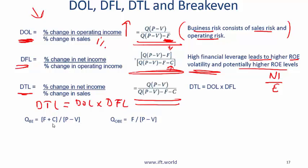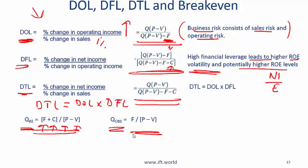The next point has to do with breakeven. The breakeven quantity is given by this formula — it is the quantity at which net profit is 0. F stands for fixed costs, C is finance costs, P is the price at which you sell, and V is your variable cost per item. QOBE is the operating breakeven, which is the quantity where your operating profit is 0. Make sure you know all these formulas.